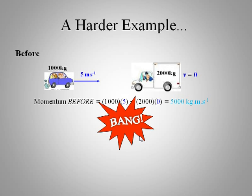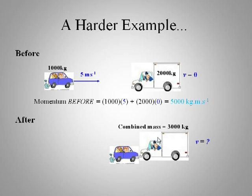And then the accident happens. And afterward, they lock together and they move off as one vehicle, one unit. And we don't know what the velocity is, but we do know their combined mass is just the sum of the two of them here. So the combined mass is three thousand. So we can say the momentum after is our mass times velocity. The mass is three thousand times our unknown, v.